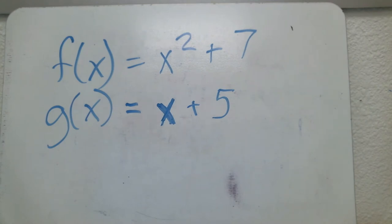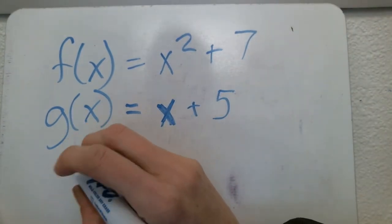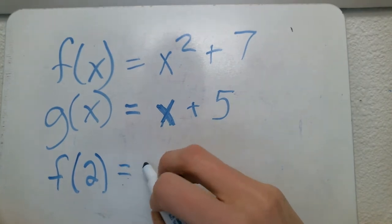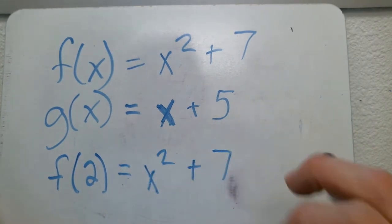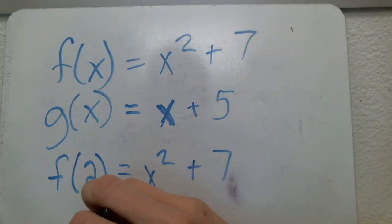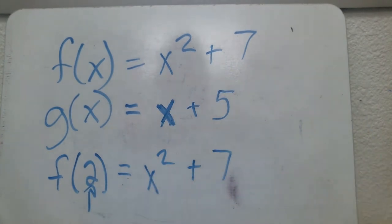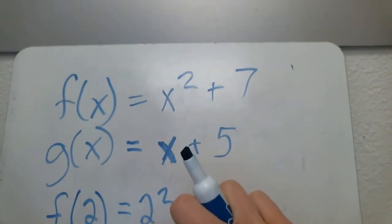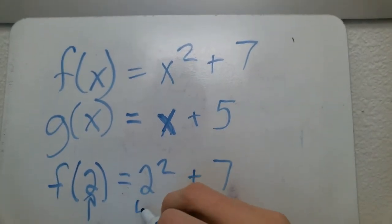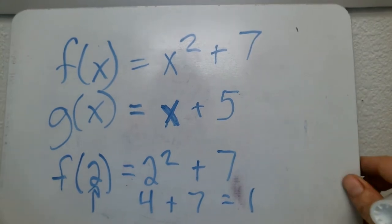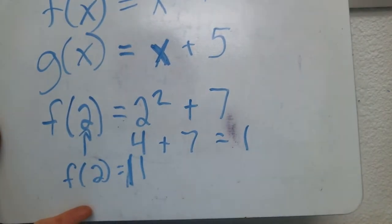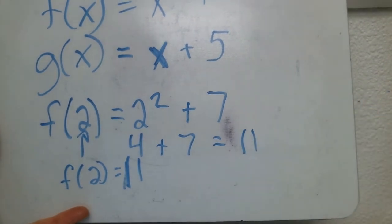The next thing we're going to look at is how we can evaluate functions for certain values. Instead of f of x, I'm going to give you the value for x. I'm going to say f of 2 equals x squared plus 7 and have you evaluate that. We take this 2 and plug it in for x. So instead of x squared plus 7, we now have 2 squared plus 7, which equals 4 plus 7, which equals 11. So f of 2 is equal to 11.